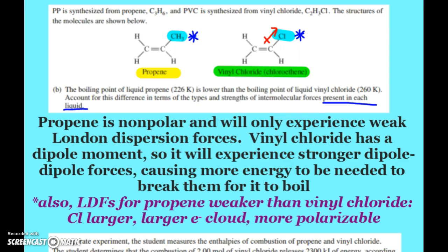Okay, so propene nonpolar will only have weak London dispersion forces. I had to mention the type and strength of the IMF present in each liquid. Vinyl chloride has a dipole moment. It will experience stronger dipole-dipole forces, causing more energy to be needed to break them in order for boiling to happen. You could have went down the, if you just mentioned the LDFs and talked about how the propenes is weaker than the vinyl chloride, it still should get you a point. But, and if you mentioned it in addition to, that's fine, but you didn't have to.